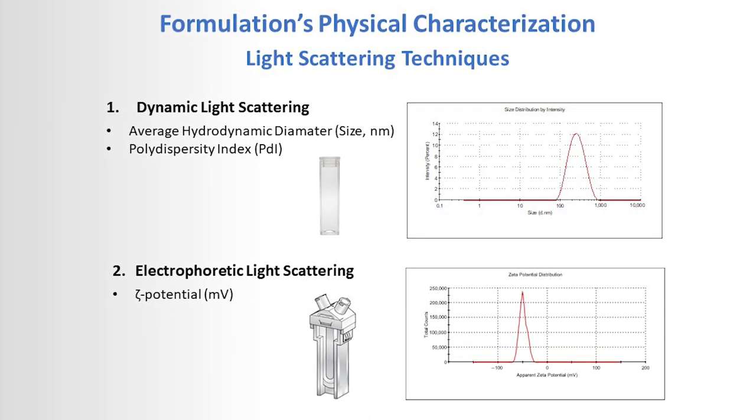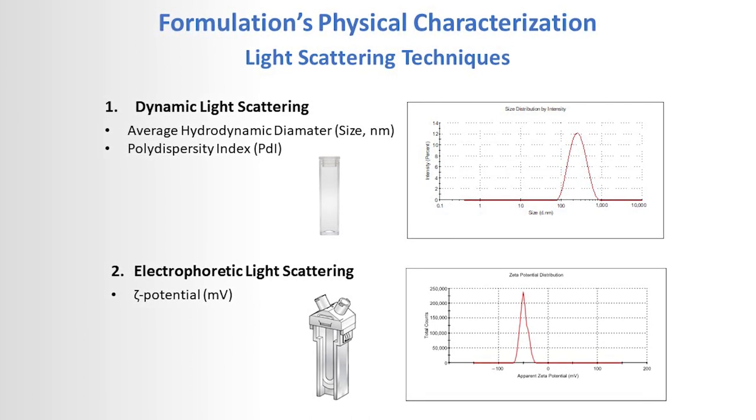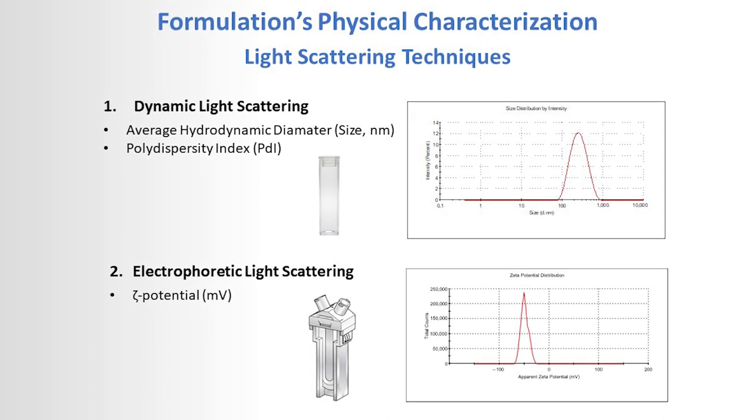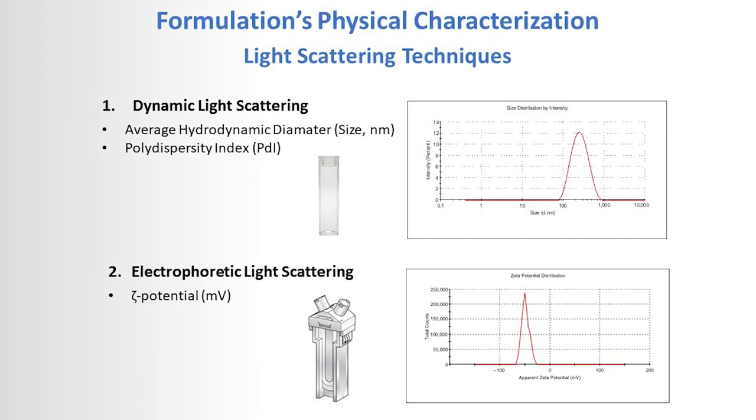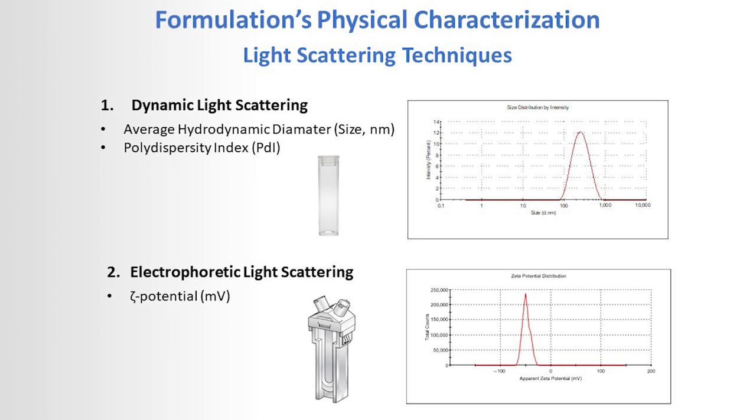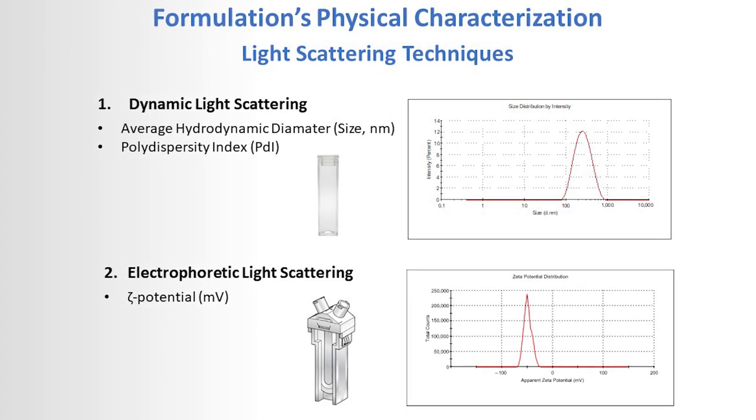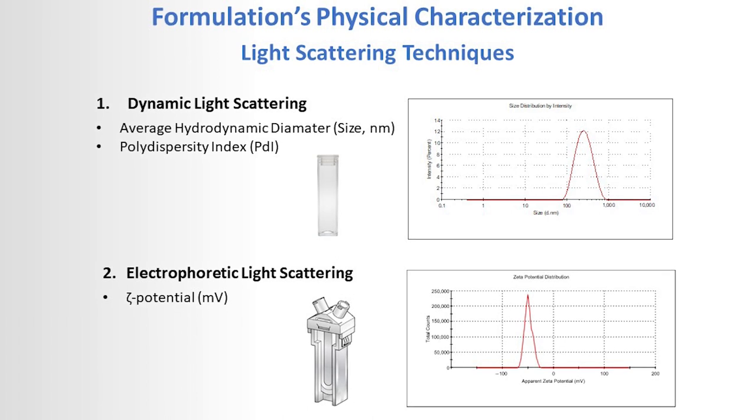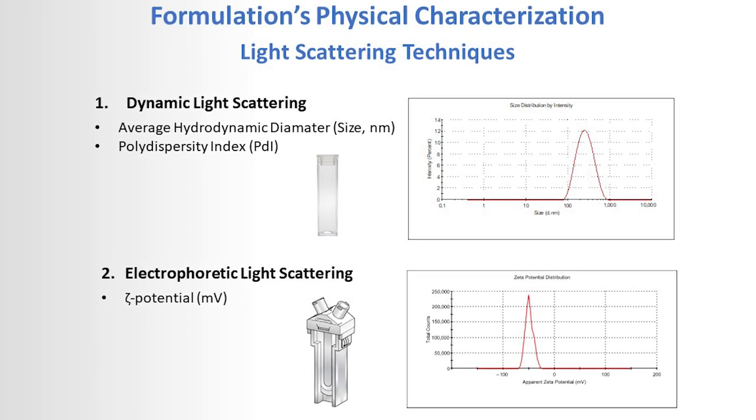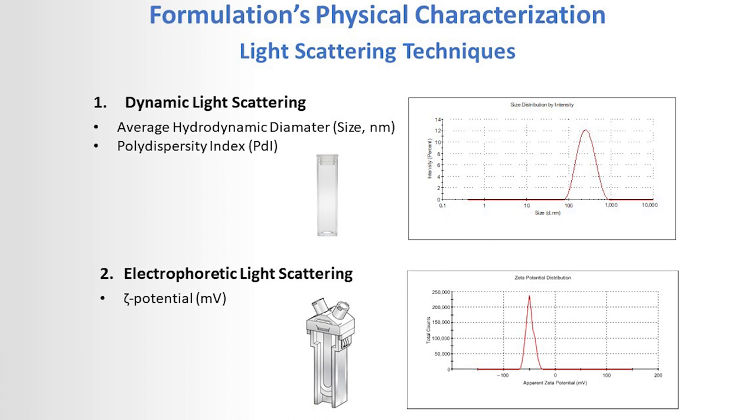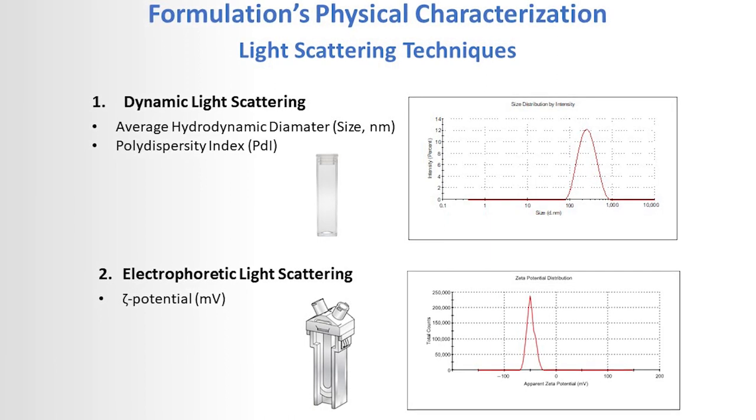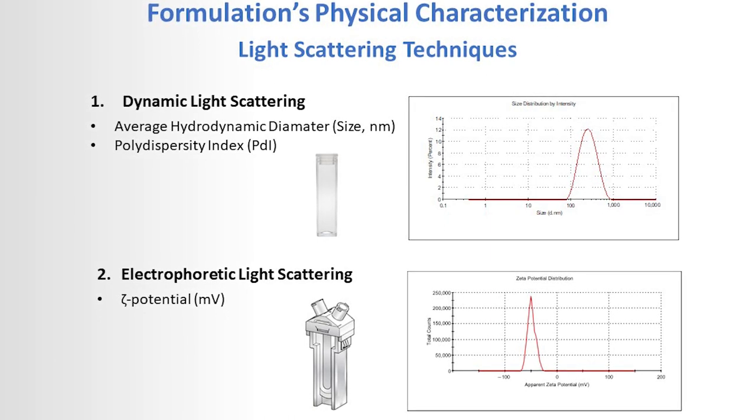Specifically, dynamic light scattering allows the measurement of average hydrodynamic diameter and polydispersity index, whereas electrophoretic light scattering provides the measurement of zeta potential. Zeta potential indicates the state of aggregation or repulsion between vesicles or globules and consequently the formulation's physical stability.